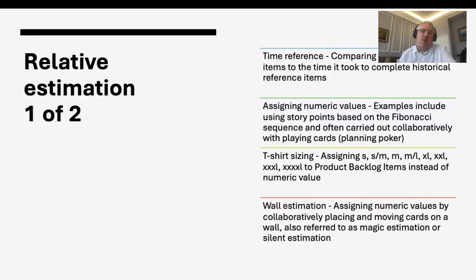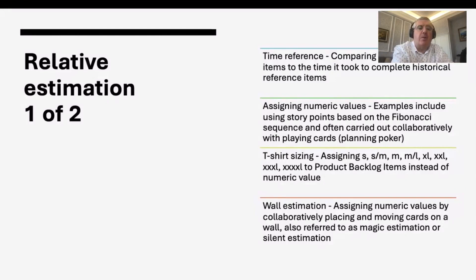Another approach is wall or table estimation: all cards on the wall or table, with silent sorting of items from smallest to biggest, and discussion where people disagree. You can do this not just for effort but also for value, ending up with both a value size and an effort size, which lets you re-rank your backlog — value divided by effort. I'll show the most popular techniques today; the full presentation covers additional options with their upsides and downsides.